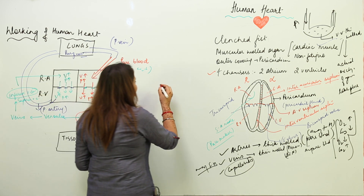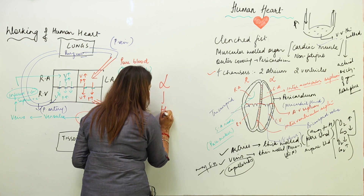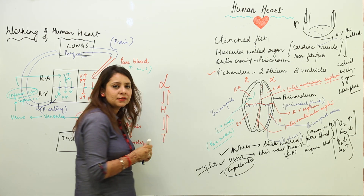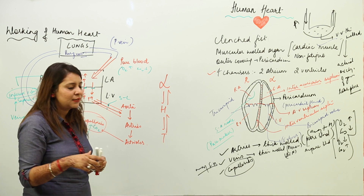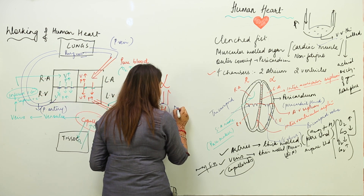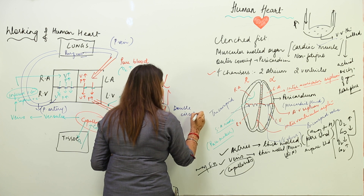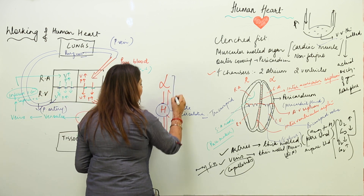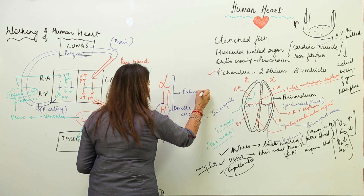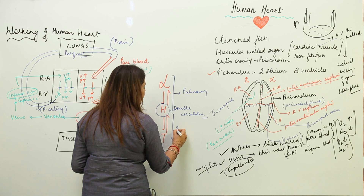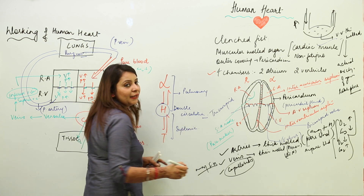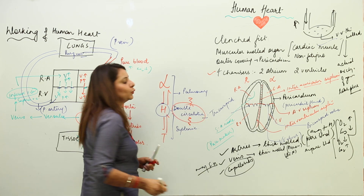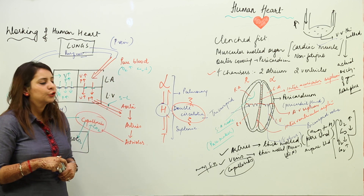Blood flows from lungs to heart, then heart to tissue, then tissue back to heart, then heart to lungs — so blood flows through the heart twice. Therefore, the circulation is called double circulation. The exchange of blood between lungs and heart is called pulmonary circulation, and between heart and tissue is called systemic circulation. Together, they form double circulation.